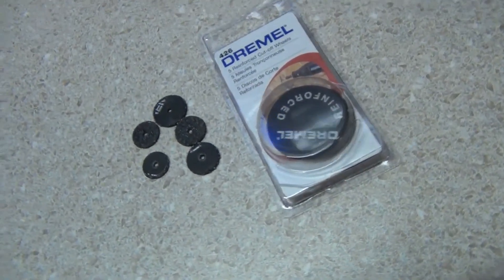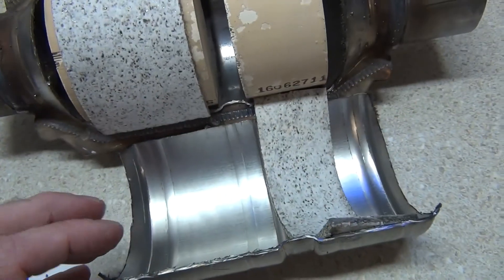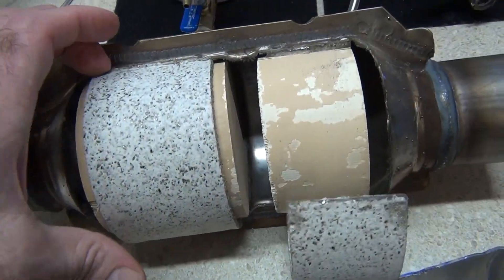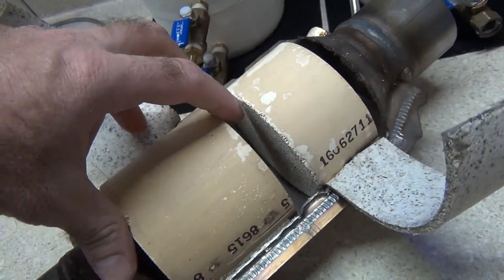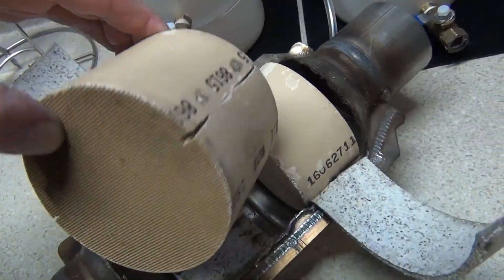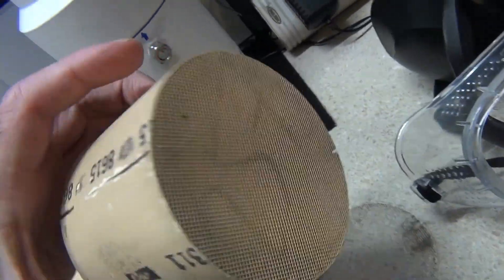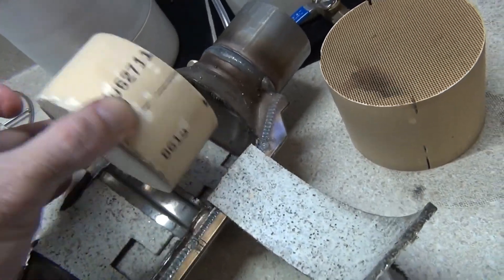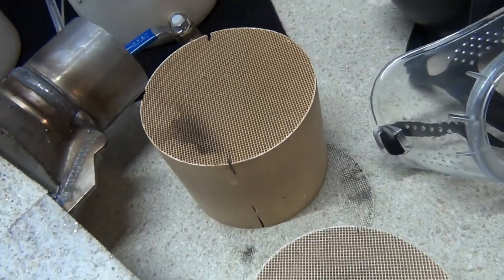So it took quite a few Dremel discs to cut into this. This stainless steel is very tough. You can see I was able to open it up and get inside. You want to remove everything out of here. I'll show you what's in here. So you get two of them. Just a larger one. And you don't want to damage these. I did the best I could not to damage it. Here's the other one. So you get two of them.